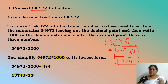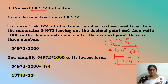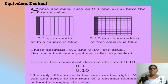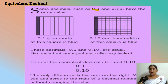This is how we convert our decimal numbers to fractions and fractions to their lowest terms. Now we will see what equivalent decimals are. Some decimals, such as 0.1 and 0.10, have the same value.